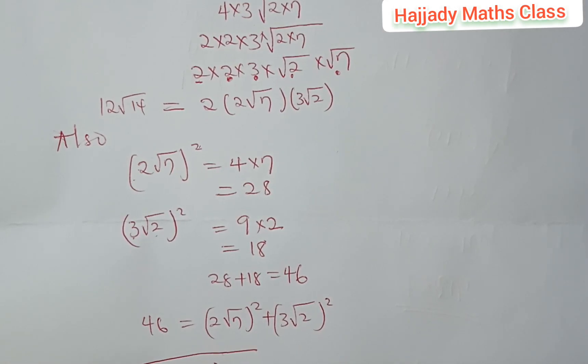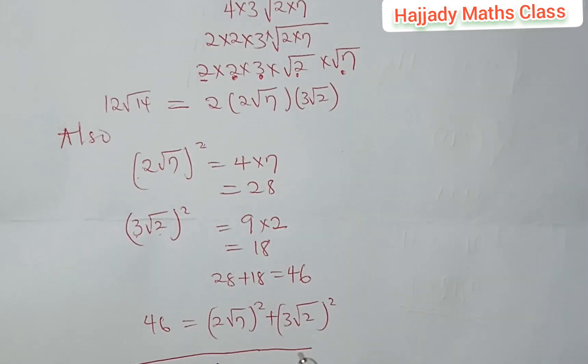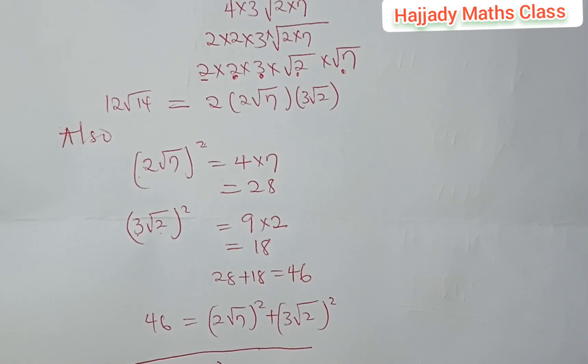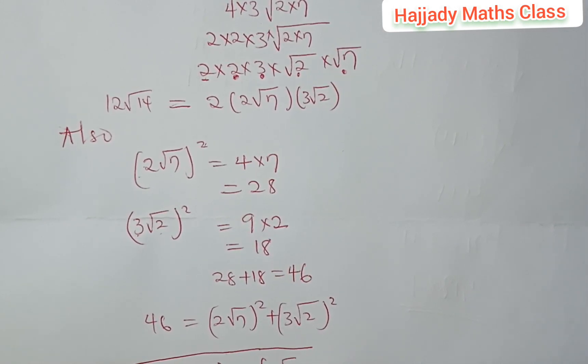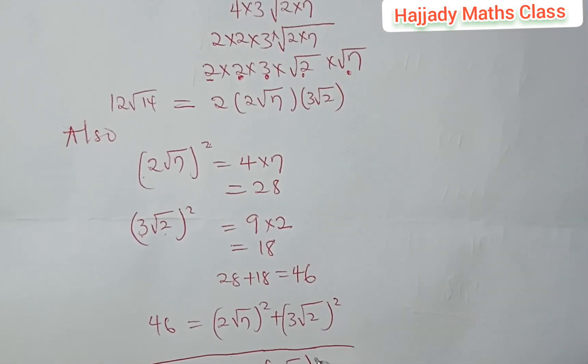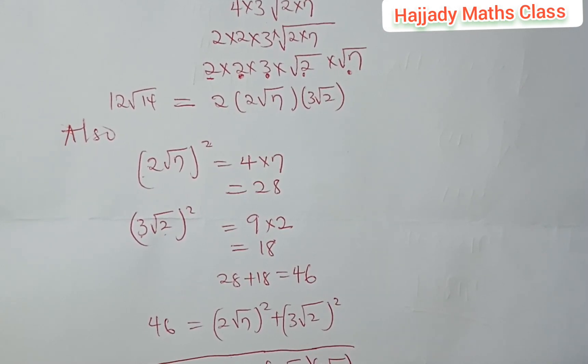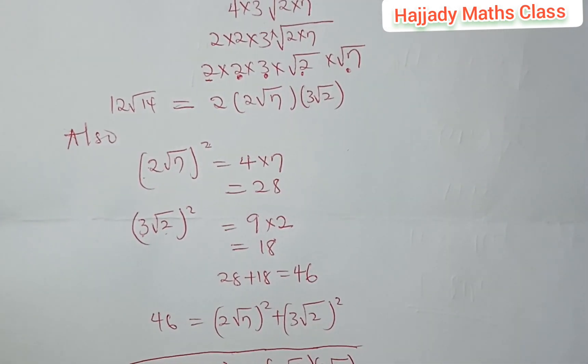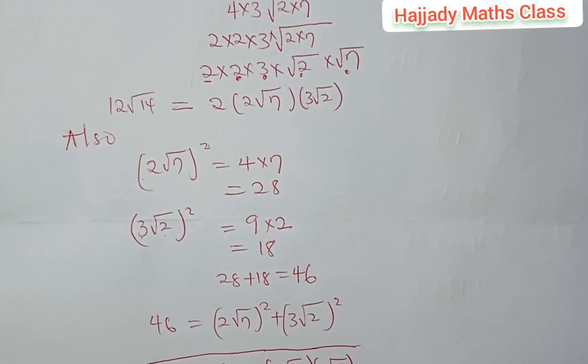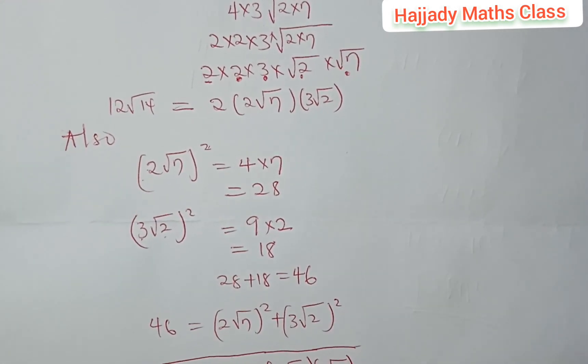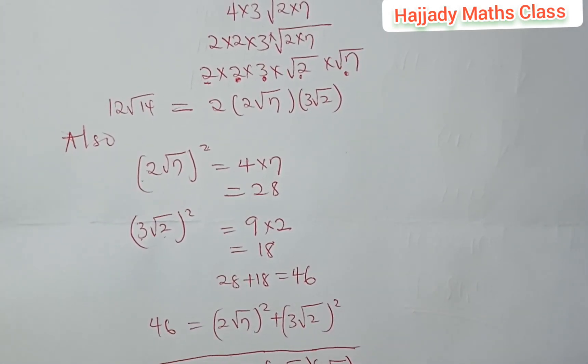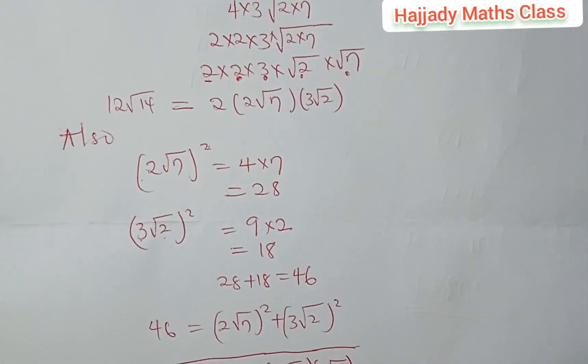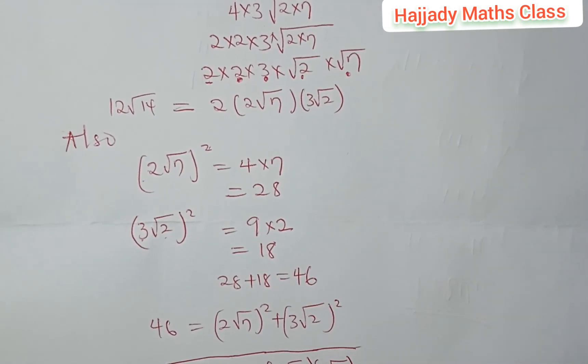So plus, minus, minus, sorry, minus 2 into bracket 2√7, 3√2. Now, let's do this. Let's assume this is A. Let's assume this is B. So, here we have 2 × A × B.